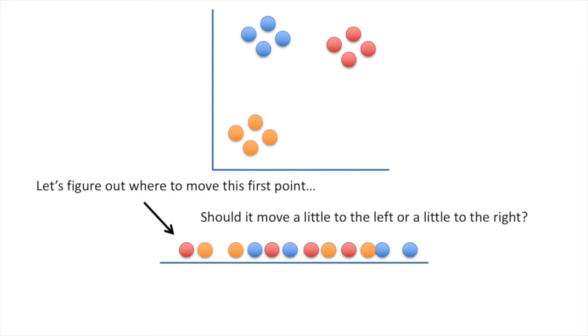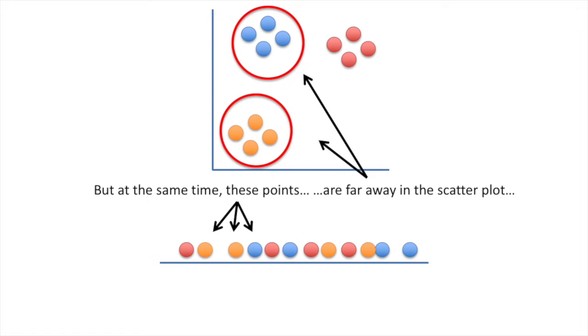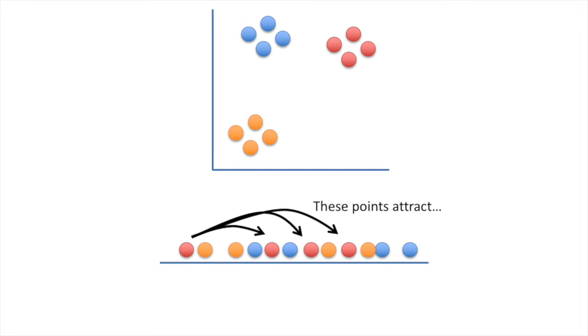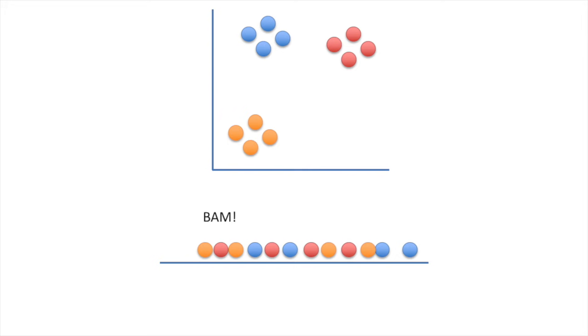Let's figure out where to move this first point. Should it move a little to the left or a little to the right? Because it is part of this cluster in the two-dimensional scatterplot, it wants to move closer to these points. But at the same time, these points are far away in the scatterplot, so they push back. These points attract, while these points repel. In this case, the attraction is strongest, so the point moves a little to the right. Bam!